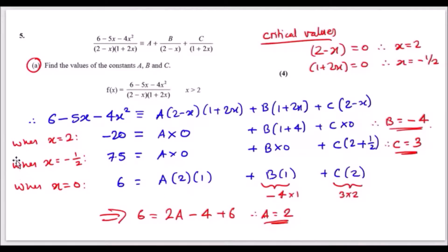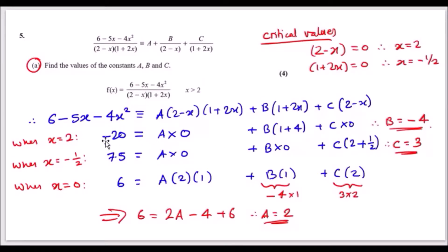When x equals 2, the left-hand side reduces to minus 20. On the right side, plugging in 2 makes (2 minus 2) equal zero, so that term vanishes. You get (1 plus 2 times 2) which is 5, so you're left with minus 20 equals 5b. Solving that gives b equals minus 4.